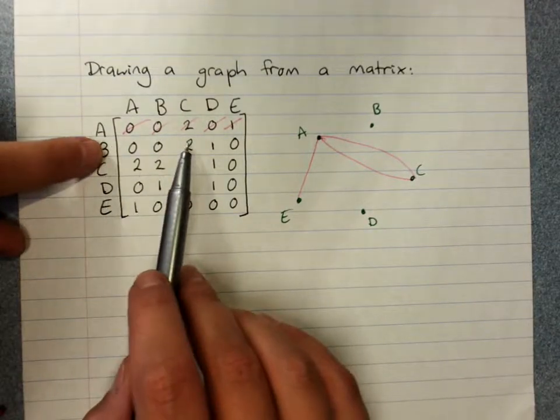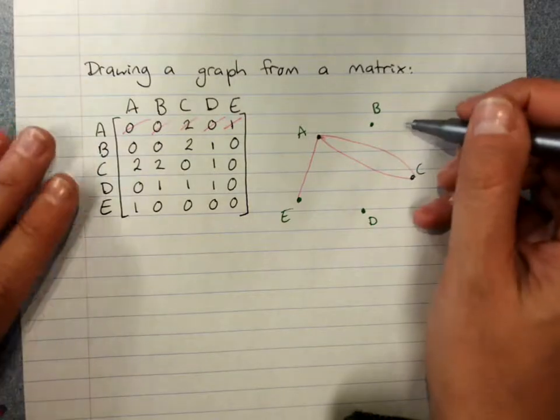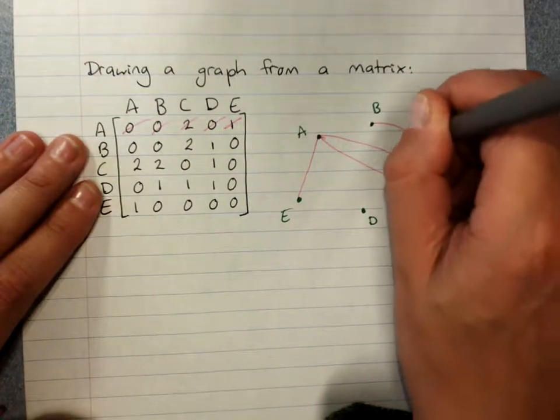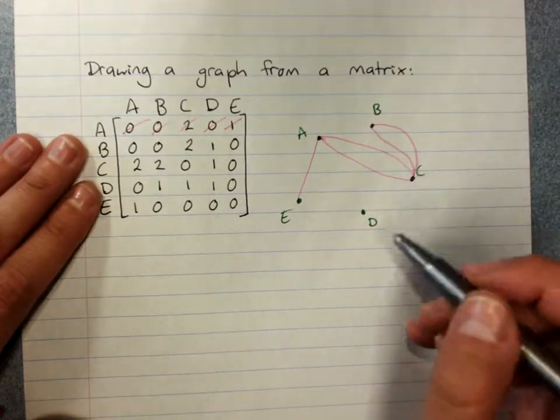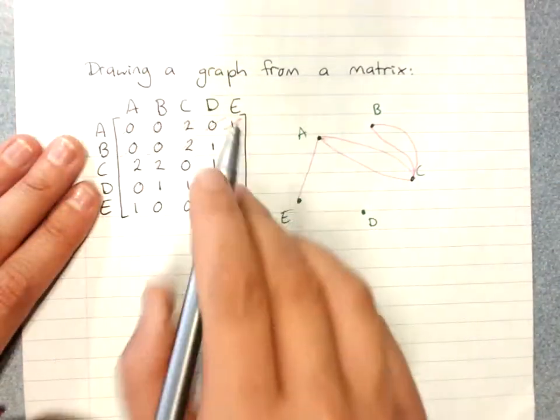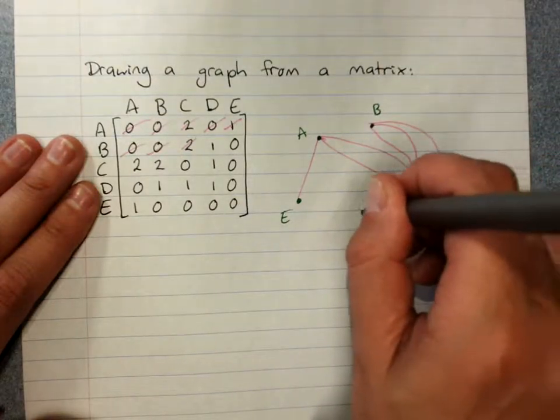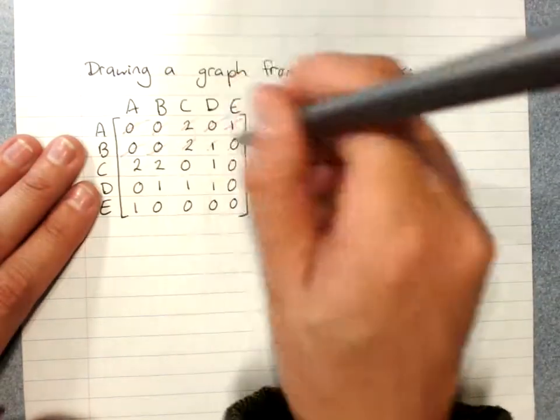B, I need two between B and C. And you can see you can start to have to do some kind of wobbling around the place. B to D, B to E, no.